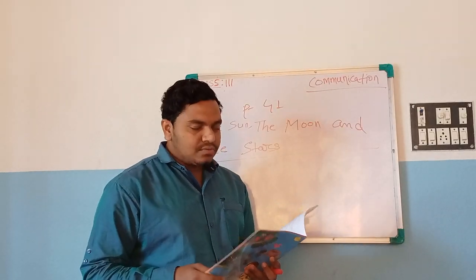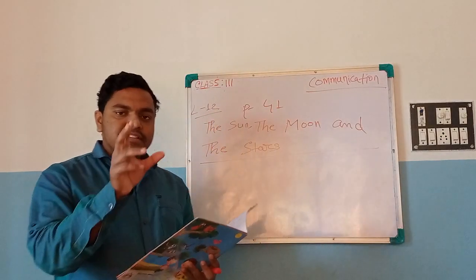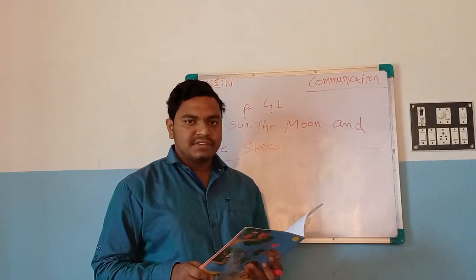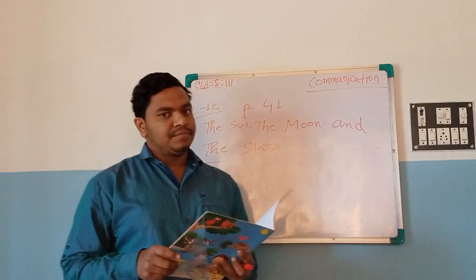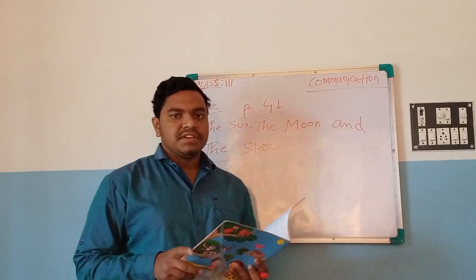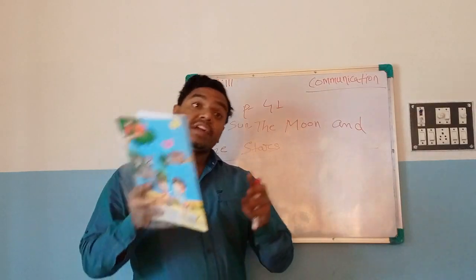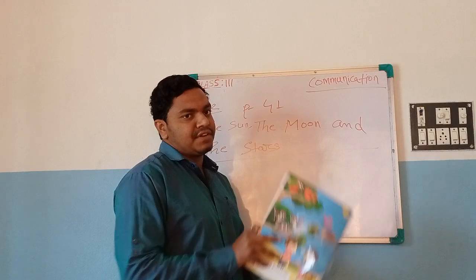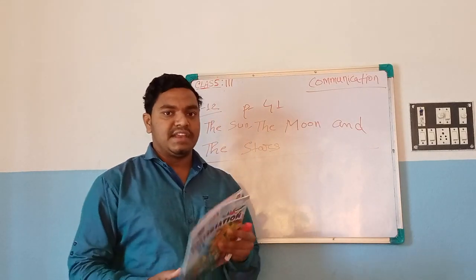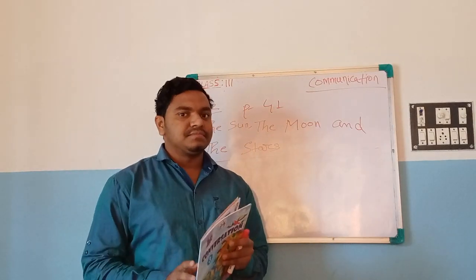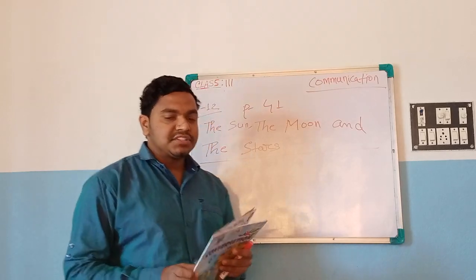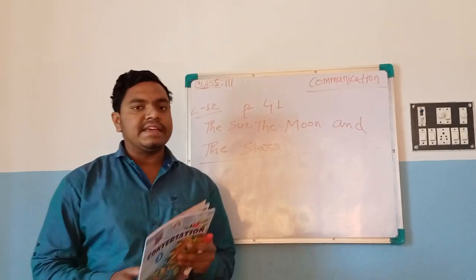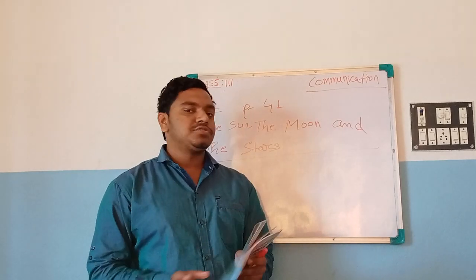The teacher is asking about the distance between the earth and the sun. The sun is very far from the earth. Because if the sun were not very far from the earth, we would all have burnt alive. The temperature of the sun is so excessive that we human beings cannot tolerate it.